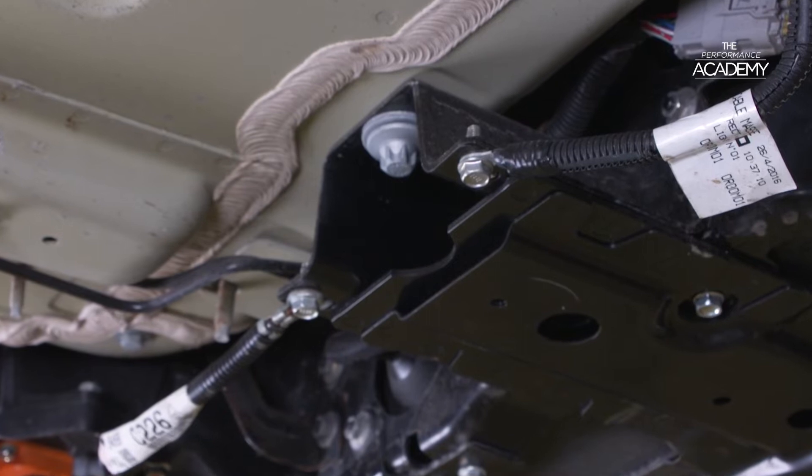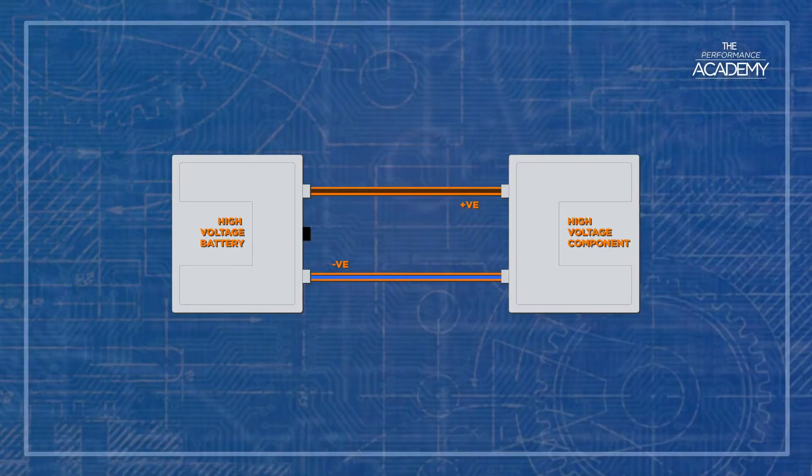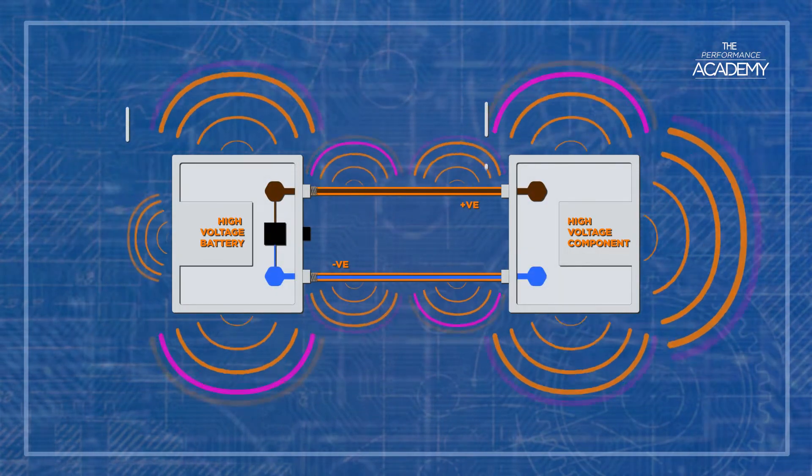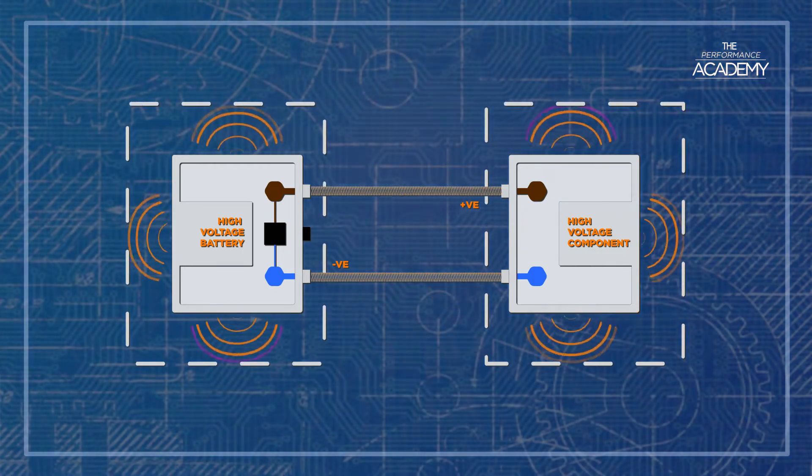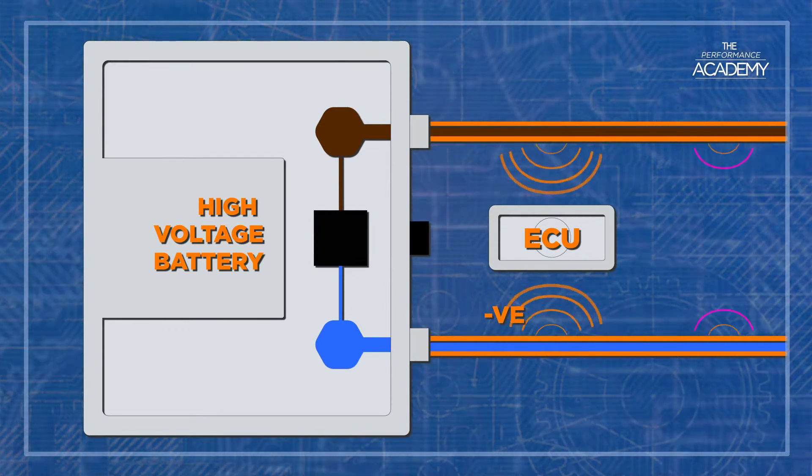All the high voltage cables and components are shielded within this metal screen which constricts the strong electromagnetic fields emitted by the high voltage currents. Otherwise these magnetic fields would interfere with the operation of the electronic control systems in the vehicle.